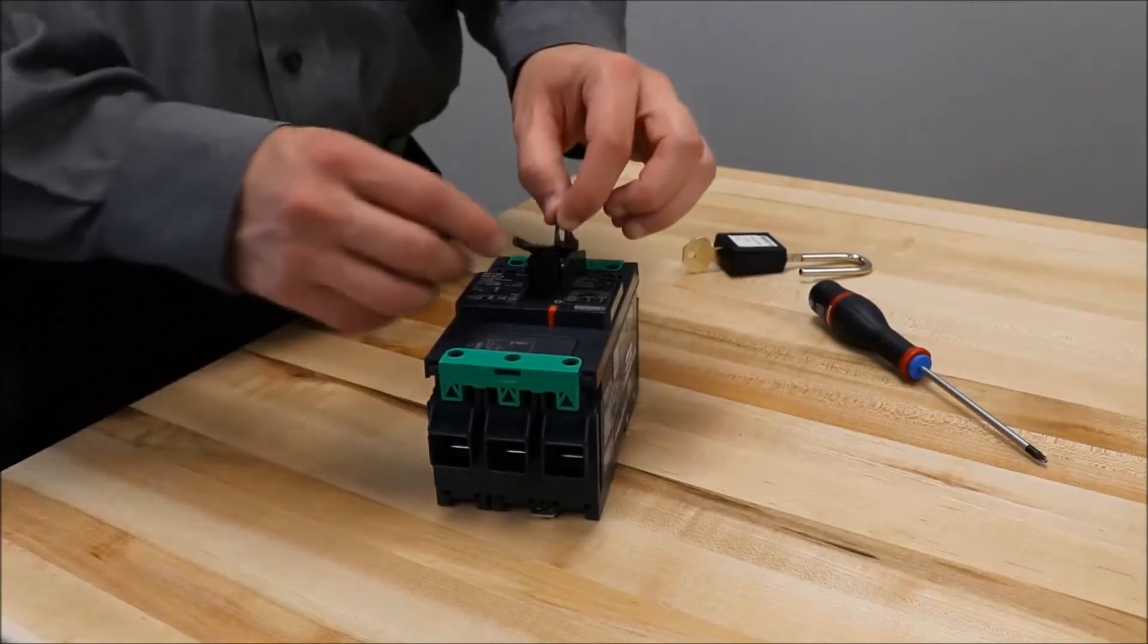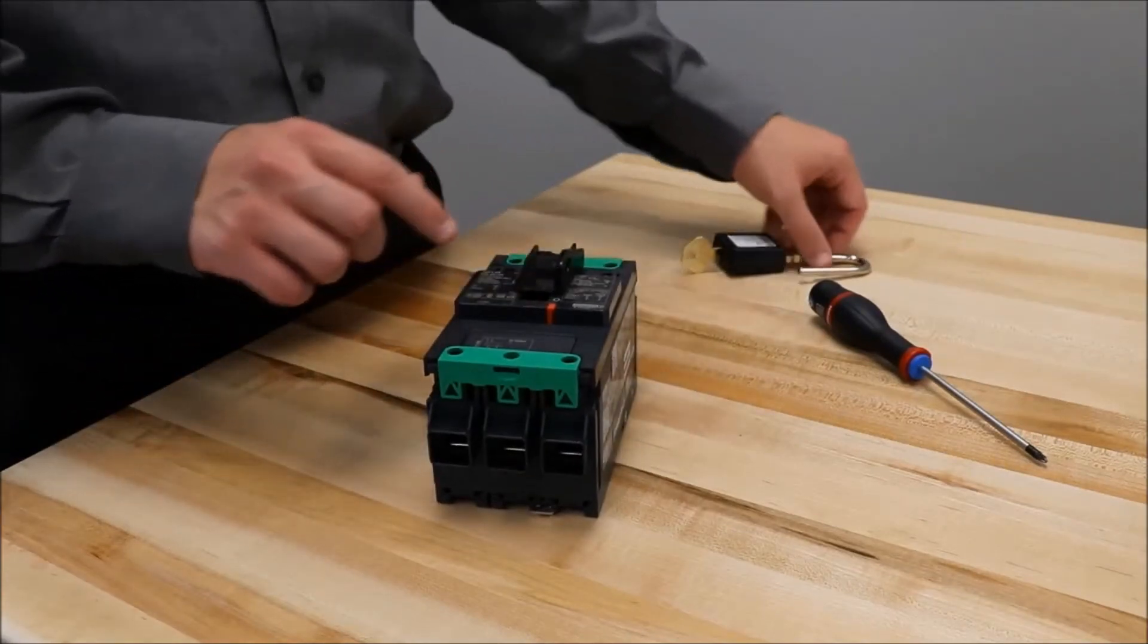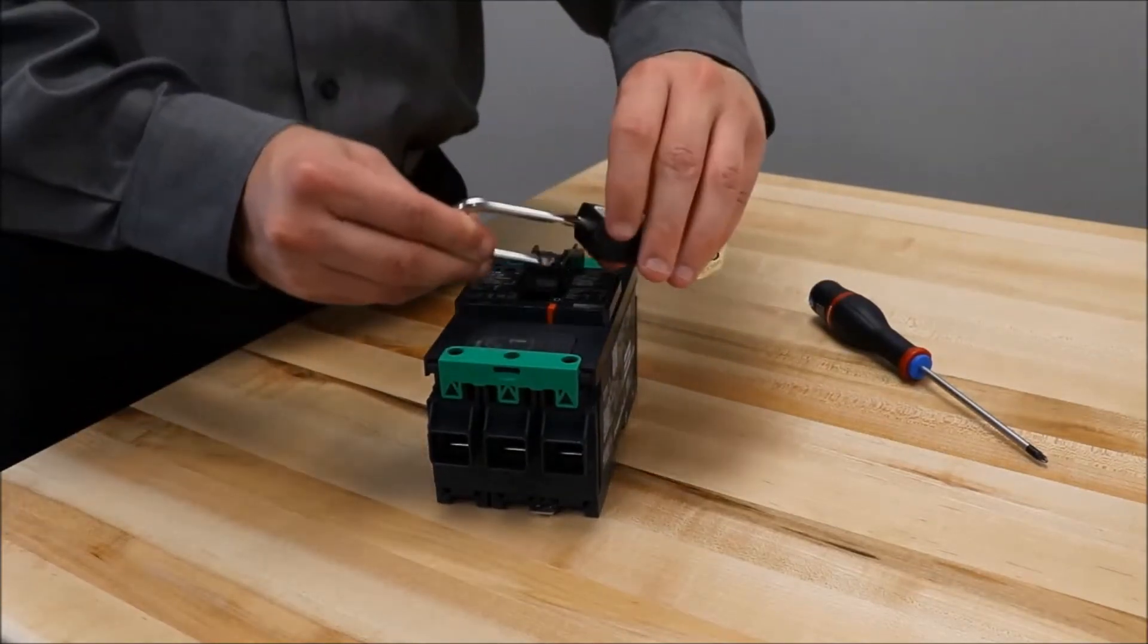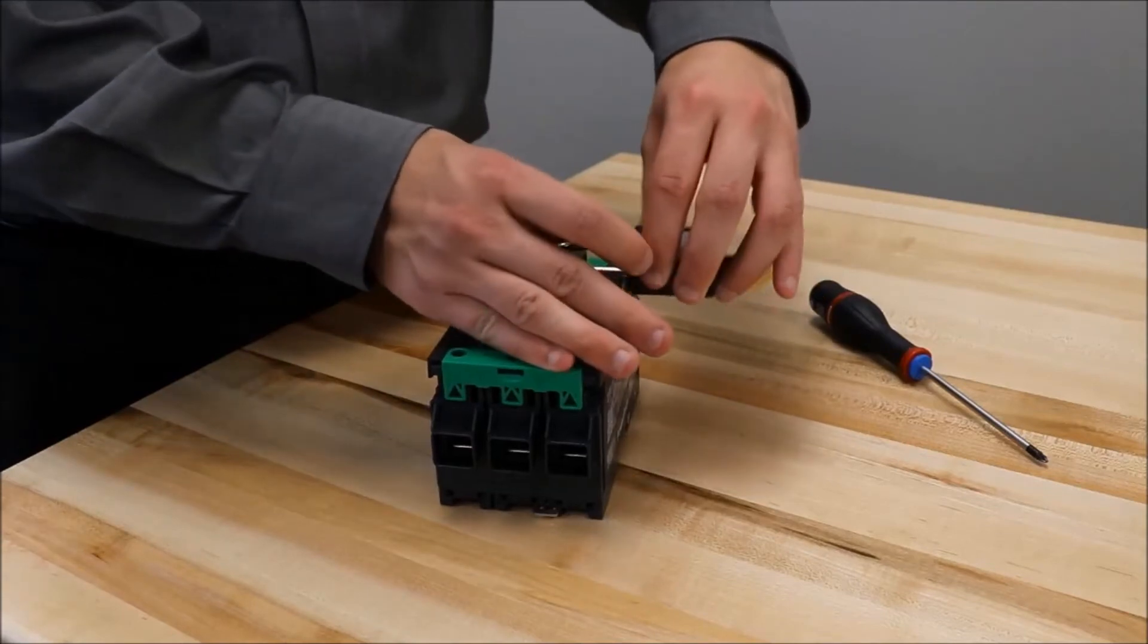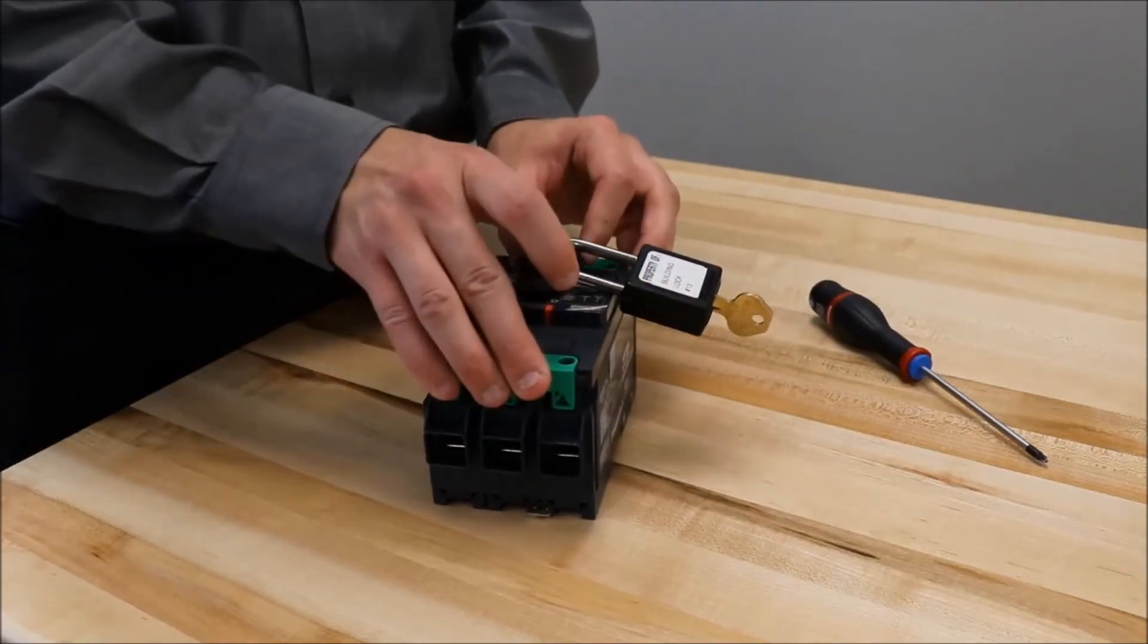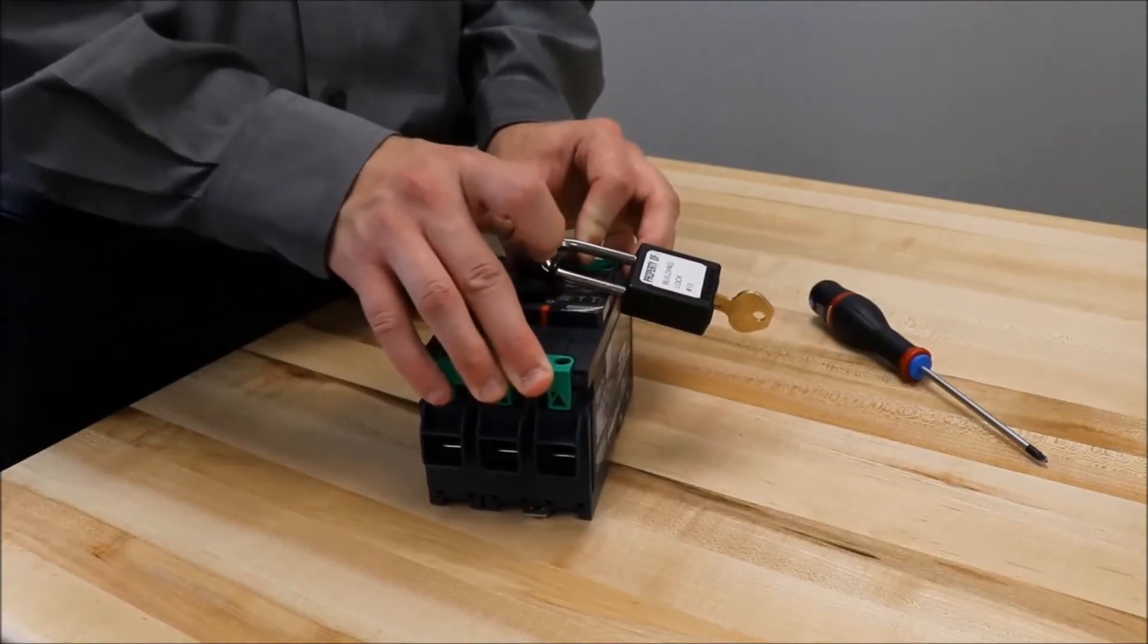With the breaker in the on position, you'll see that it fits over the handle so that once the padlock is inserted and locked, the handle cannot be turned into the off position.